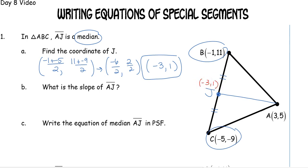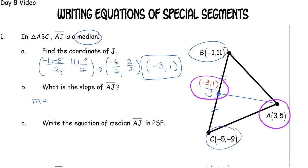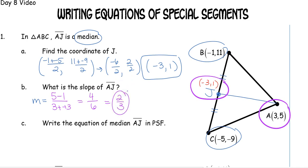To write an equation we need two things: a point and a slope. To find the slope of segment AJ we use our slope formula — subtracting the Y's on top and the X's on the bottom using the coordinates of A and J. We get 5 minus 1 on top and 3 minus negative 3 on the bottom, giving us 4 over 6, which reduces to 2 thirds. So the slope of AJ is 2 thirds.